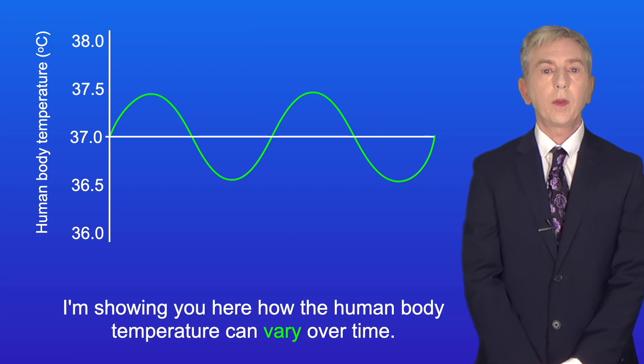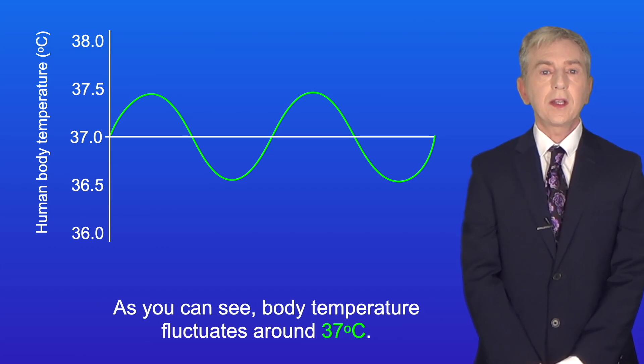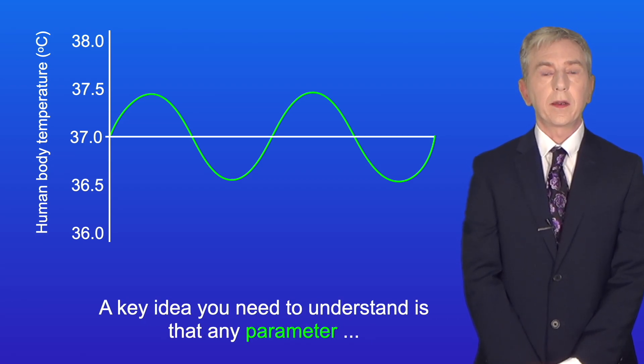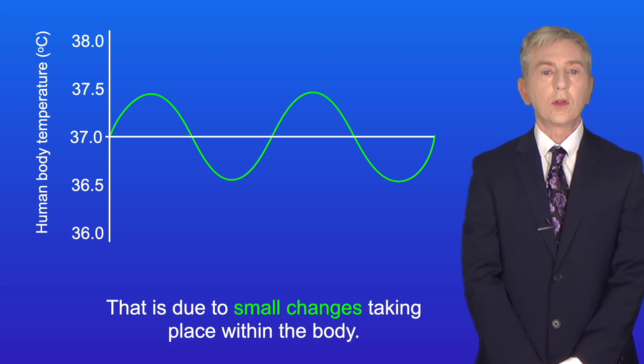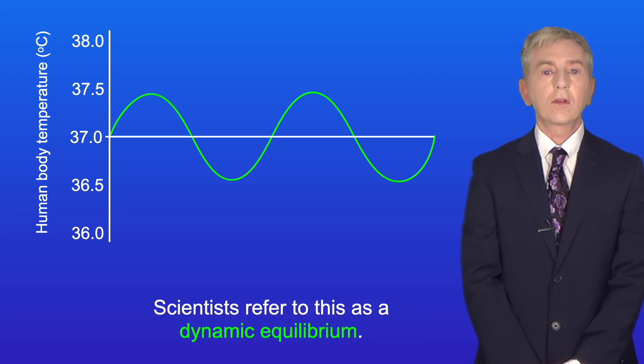I'm showing you here how the human body temperature can vary over time. As you can see, body temperature fluctuates around 37 degrees Celsius. Now a key idea you need to understand is that any parameter will fluctuate slightly around an optimum level, and that's due to small changes taking place within the body. Scientists refer to this as a dynamic equilibrium.